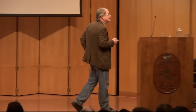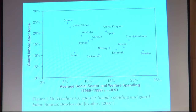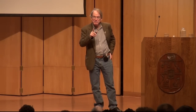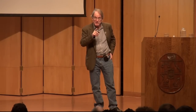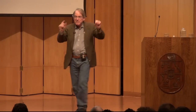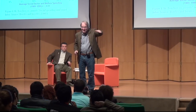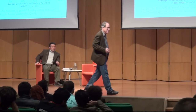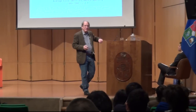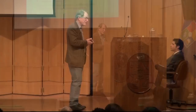Looking at social spending across European countries, countries that spend a lot on welfare and social spending don't spend very much on guard labor — there's a strong negative correlation. Social spending and guard labor are substitutes. Think of it like an isoquant: you need some combination of social spending and guard labor to keep things stable. If you have more of one, you need less of the other. More social spending, fewer guards.